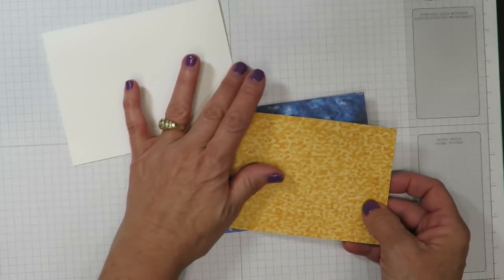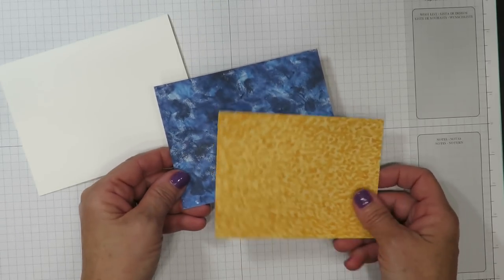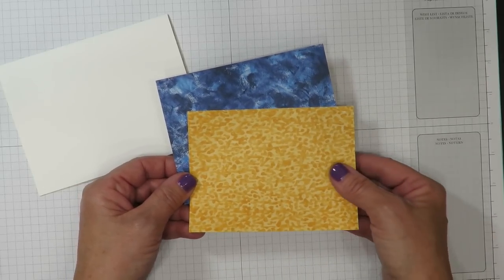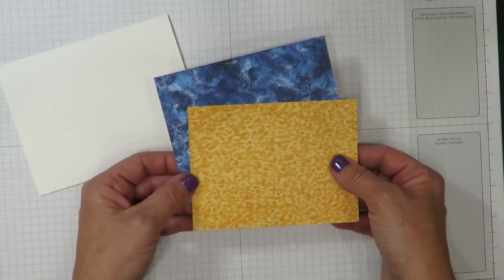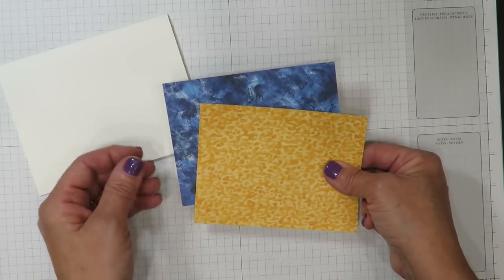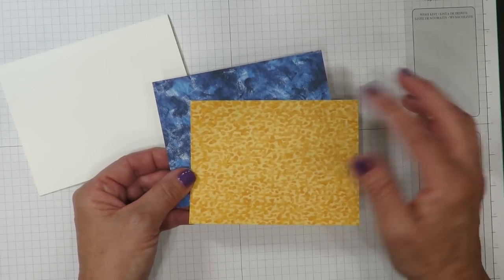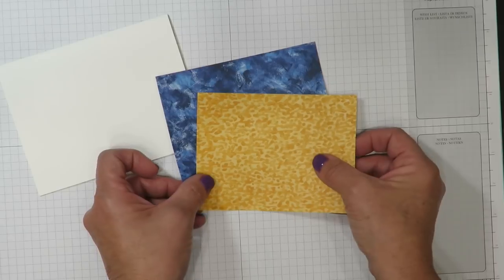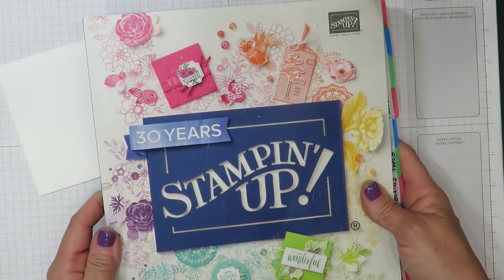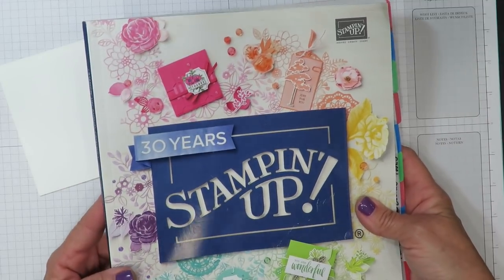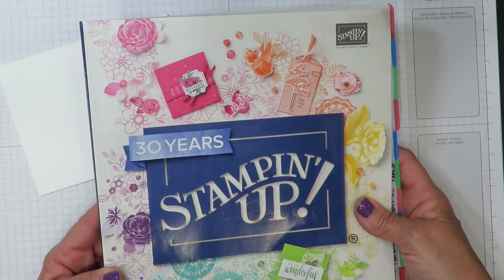Just ahead of the video I've pre-cut some designer series paper. This is from the Garden Impressions designer series paper stack. Like almost all Stampin' Up designer series papers they are double-sided giving you lots of options within the same package. If you don't already have a Stampin' Up demonstrator and you are interested in a complimentary copy of the annual catalog I would be more than happy to send you one. Just leave me a comment below.